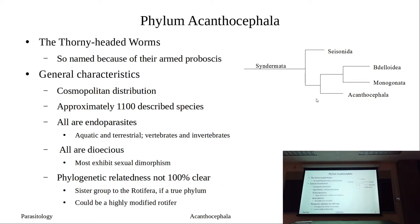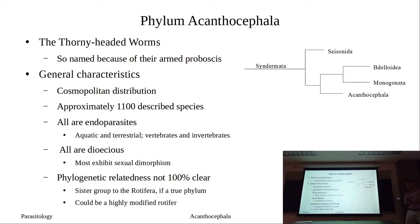So why are they named the thorny headed worms? It's because of their proboscis — they have a proboscis that has hooks on them at the anterior end. They have a cosmopolitan distribution; we'll find them all throughout the globe. There's only about 1,100 described species, so it's not super speciose, but all of them are endoparasites. You're going to find aquatic life cycles, terrestrial life cycles, and acanthocephalins that infect vertebrates and invertebrates. It is a diverse group in terms of their life cycles, who they use, and where they occur.